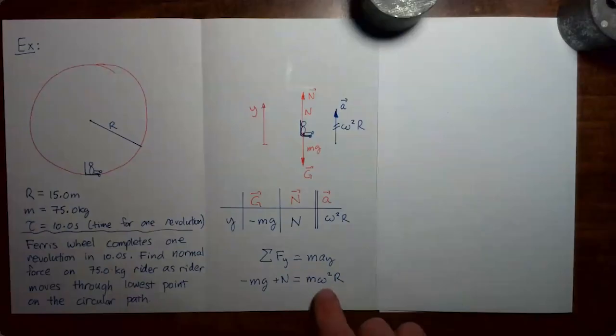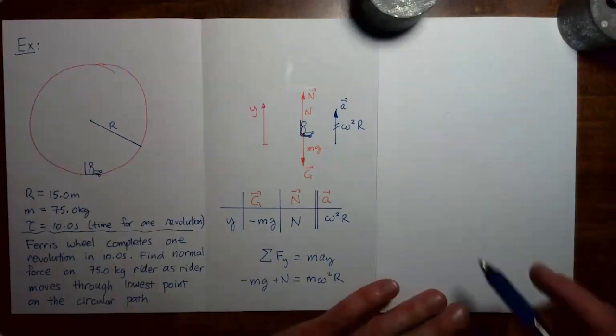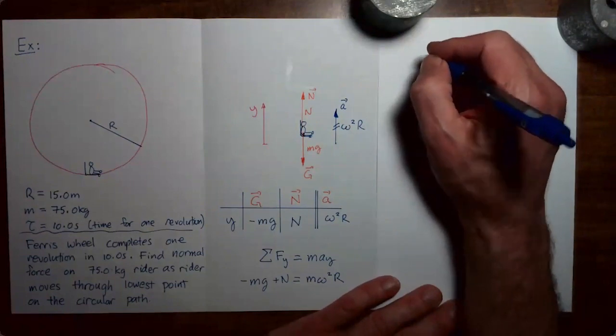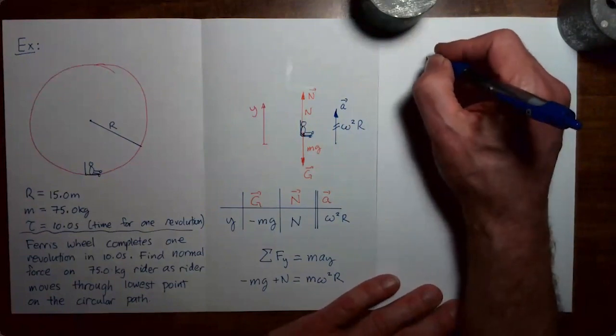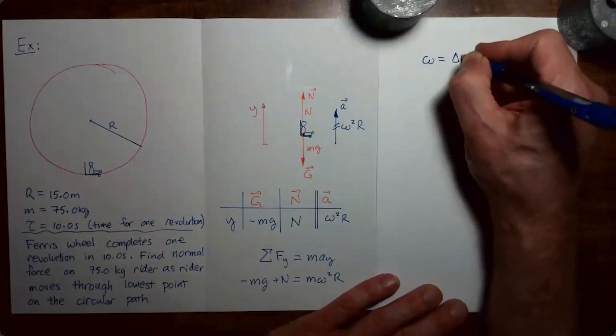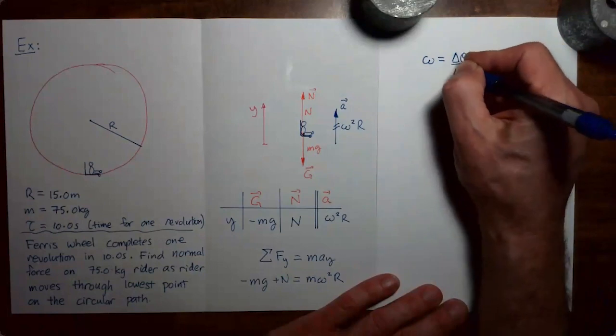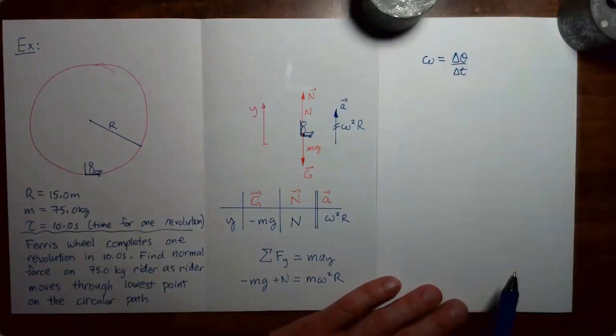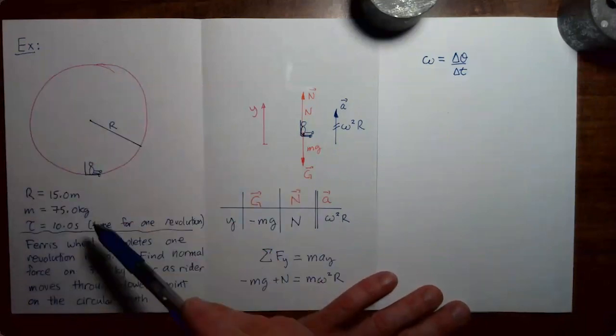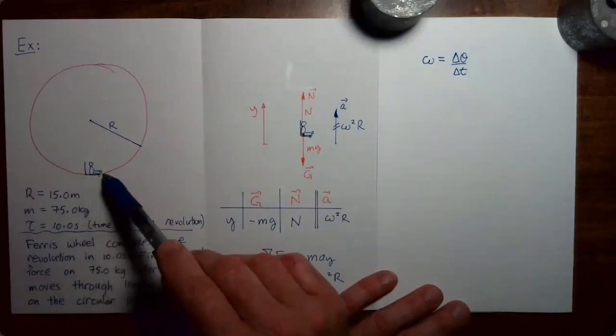Before we proceed, let's think about how we're going to solve for the angular velocity. We've seen earlier that if an object is moving in a circle with a constant angular velocity, we can say that the angular velocity equals the change in angle during some time interval divided by the time interval.